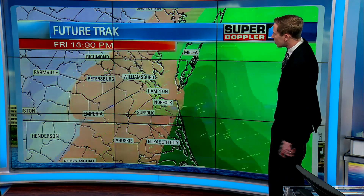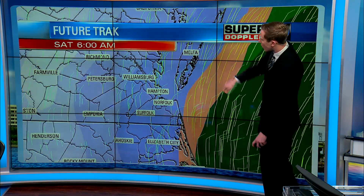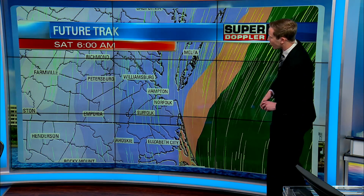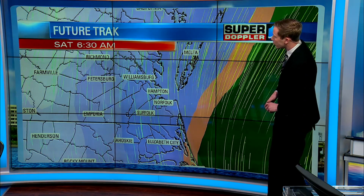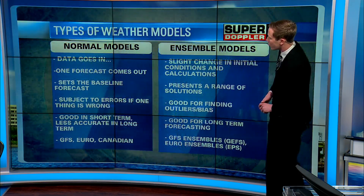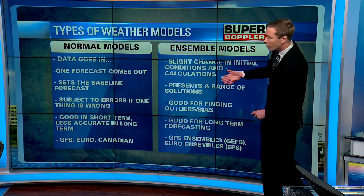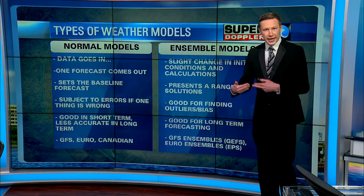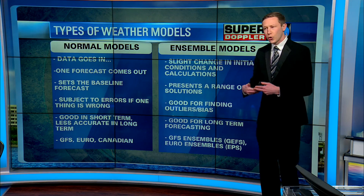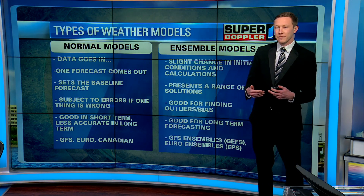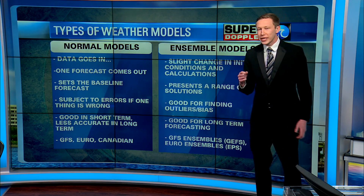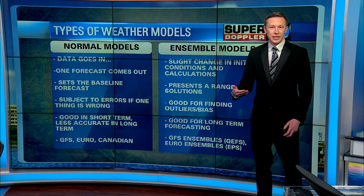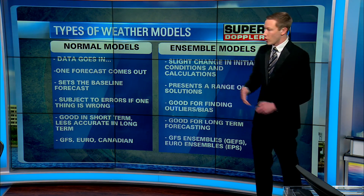This model that you see behind me, you've probably seen this on TV before. It's that typical one that shows the different colors, the wind. These are deterministic models — the GFS and the European model. With these, you've got data that goes in and then data comes out. The problem with these sometimes is if your initial data is just slightly off a little bit, the outcome data can be wrong as well.